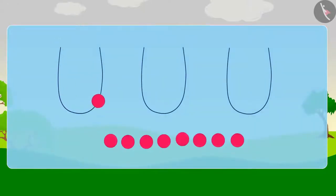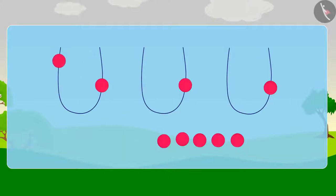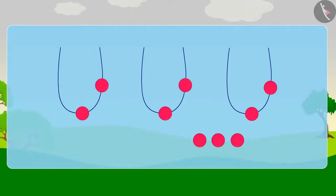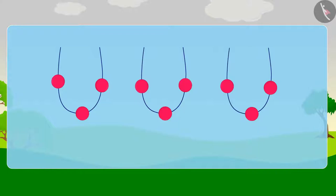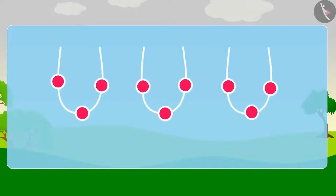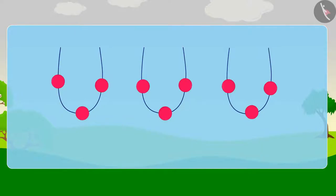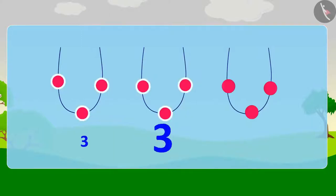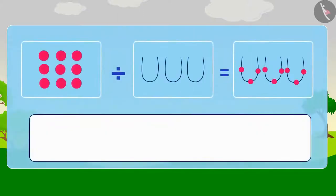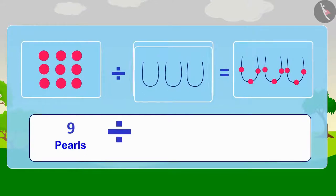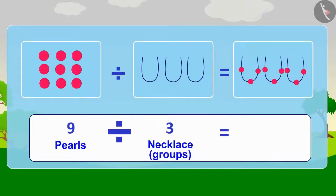First, we will put one pearl in each necklace. Now we have six pearls left. We will put one more pearl in each necklace. Now we have three pearls left. Finally, we will put one last pearl in each necklace. Appu has no pearls left, and his three necklaces are ready. Each necklace has three pearls. In other words, Appu's nine pearls were divided into three equal groups, and each group had three pearls.